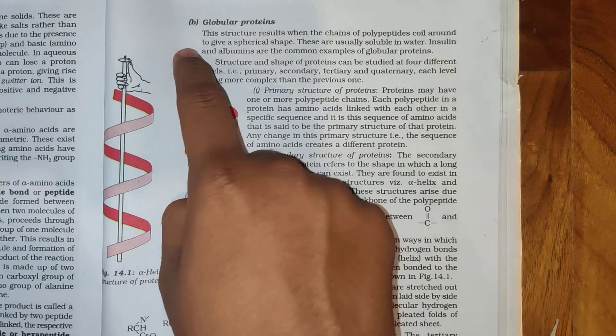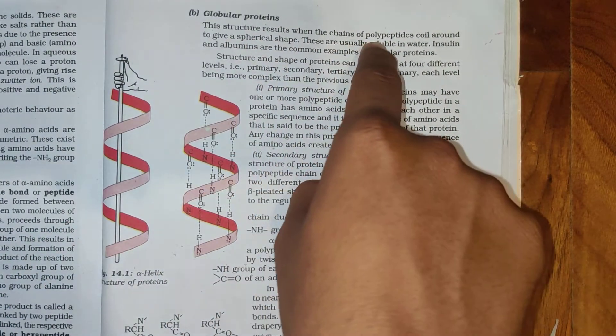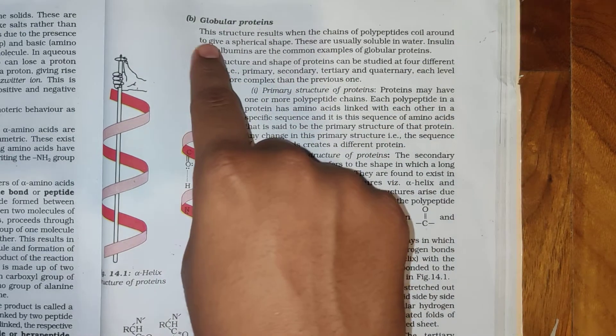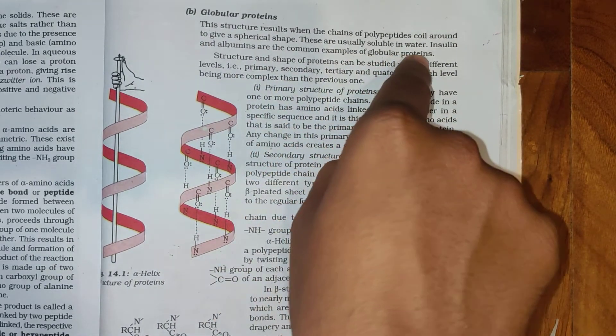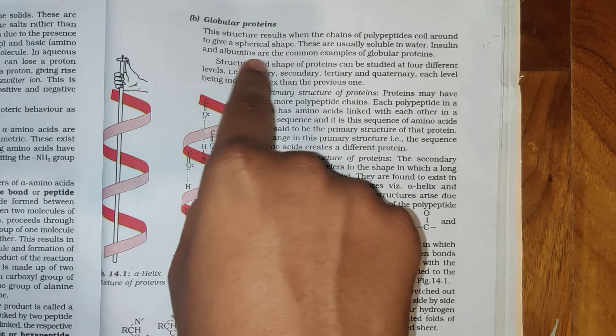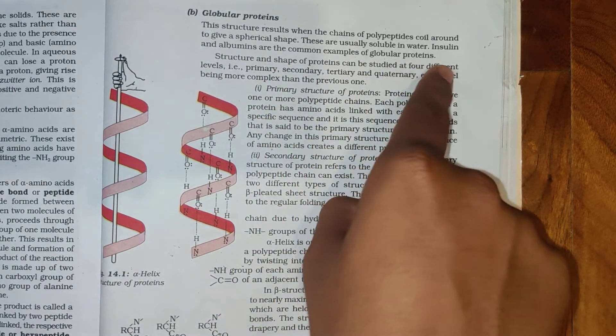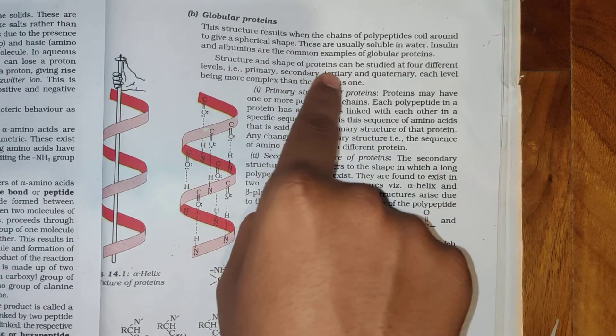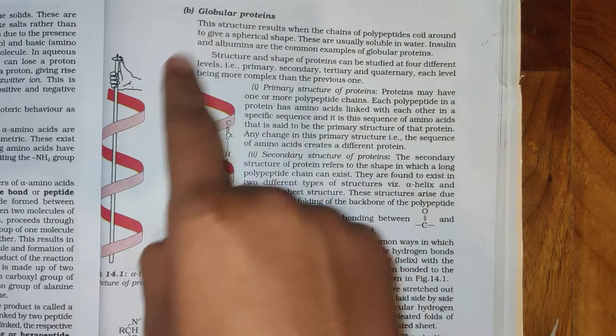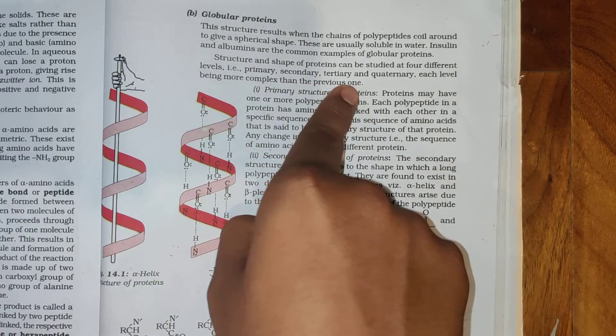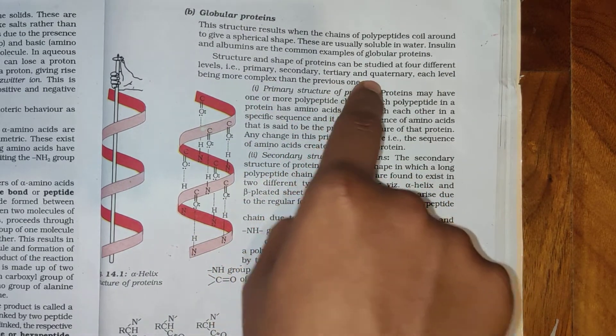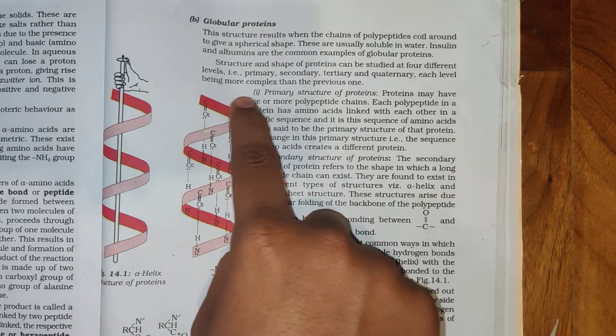Globular proteins: This structure results when the chains of polypeptides coiled around to give a spherical shape. These are usually soluble in water. Insulin and albumin are the common examples of globular proteins. Structure and shape of proteins can be studied at four different levels: Primary, secondary, tertiary, and quaternary. Each level being more complex than the previous one.